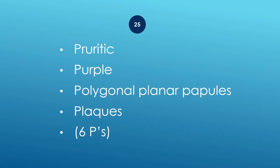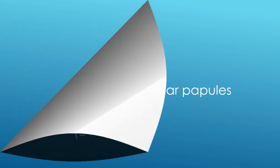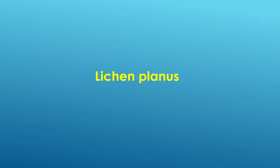6 Ps: Pruritic, purple, polygonal, planar papules and plaques — lichen planus.